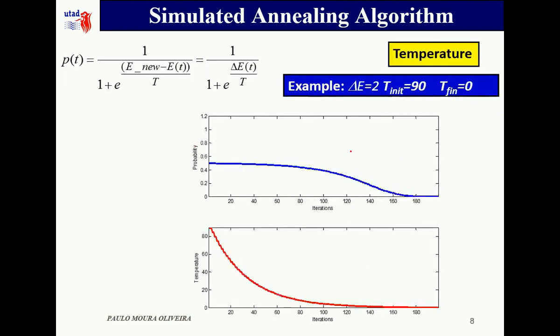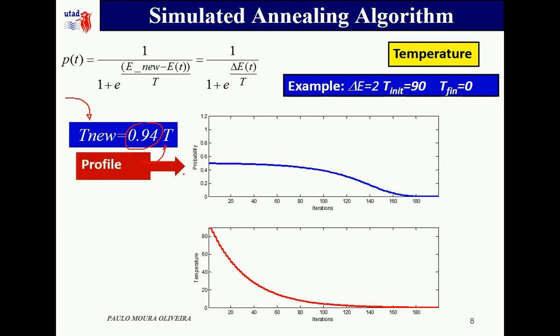If we now repeat the prior simulations with another scheduling law, in this case the new temperature is obtained from the previous temperature using this factor, 0.94, the difference is not only in the profile. The profile both in the temperature schedule and in the probability value is much smoother. The initial value in this case is 0.5.